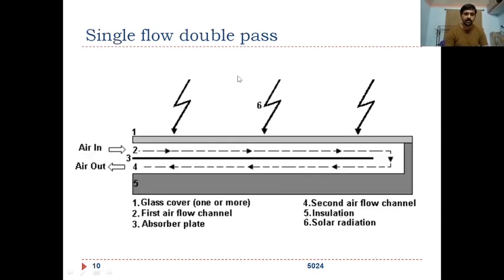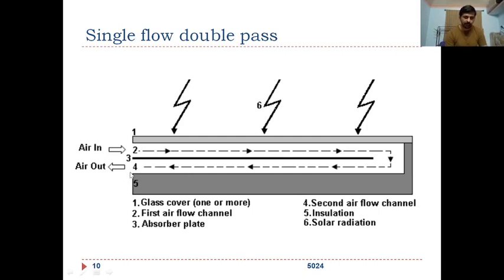The third category is single flow double pass. Here, air enters through the upper side of the absorber plate and comes back through the bottom side of the absorber plate. There is no outlet at the far end — it is closed — and the air goes back out through the same side it entered.